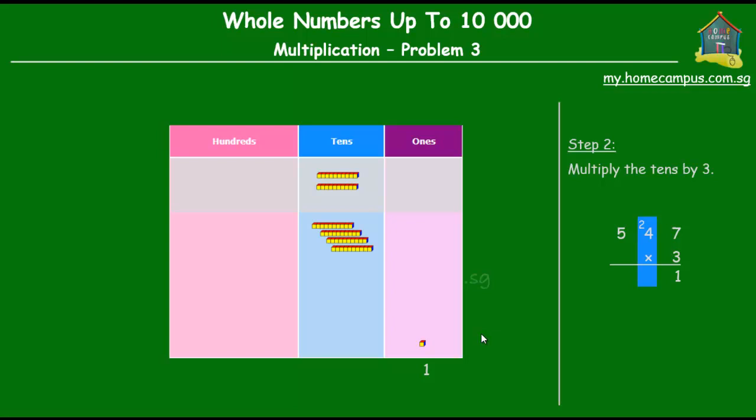4 tens times 3 would be equal to 3 sets of 4 tens. So, 4 tens times 3 is equal to 12 tens. Now let's look at this tens column here. We have 2 tens that we got from regrouping in the previous step and we have 12 tens here that we got from multiplying 4 tens by 3. So all together we have 2 plus 12 and that's equal to 14. So we have 14 tens.